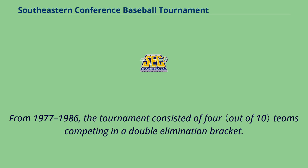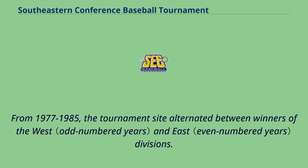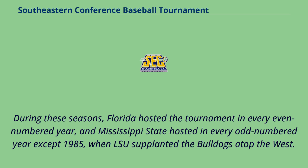From 1977 to 1986, the tournament consisted of four teams competing in a double elimination bracket. The top two teams in each division qualified, and the winner was declared the overall champion. From 1977 to 1985, the tournament's site alternated between winners of the West and East divisions. Florida hosted the tournament in every even-numbered year, and Mississippi State hosted in every odd-numbered year except 1985, when LSU supplanted the Bulldogs atop the West.